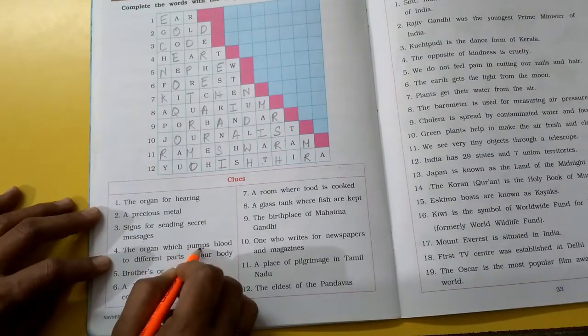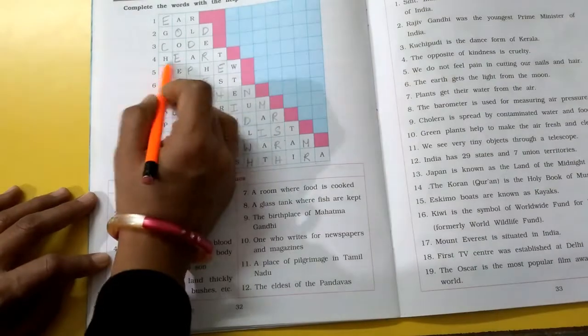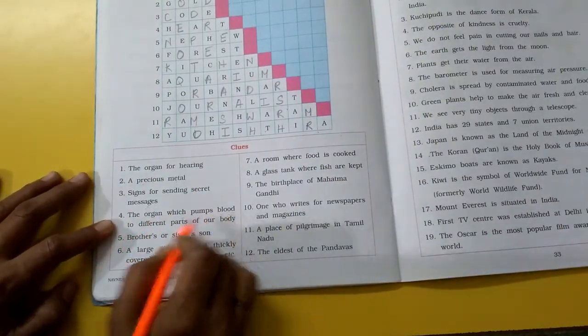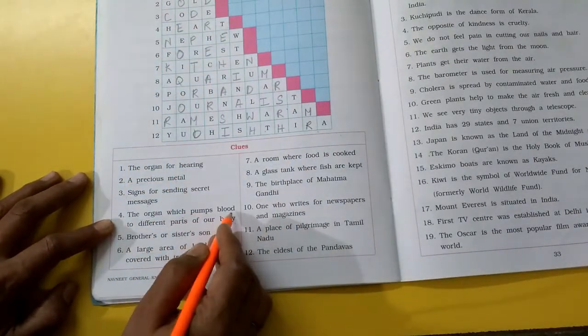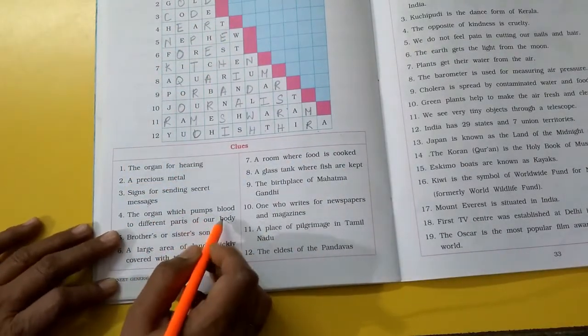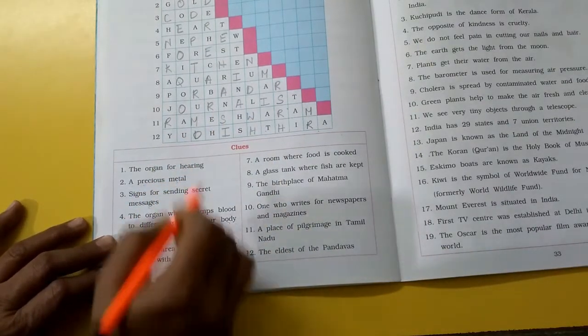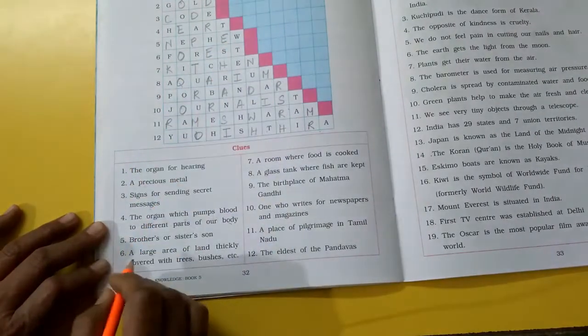The organ which pumps blood to different parts of our body. Heart. Heart is the organ which pumps the blood to different parts of our body. Brothers or sisters son. Nephew. Brother ya sister ke son ko hum nephew kehte hain.